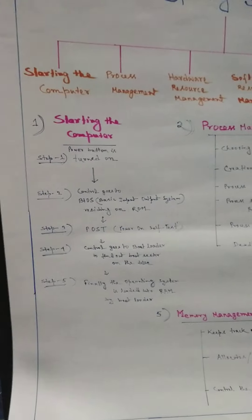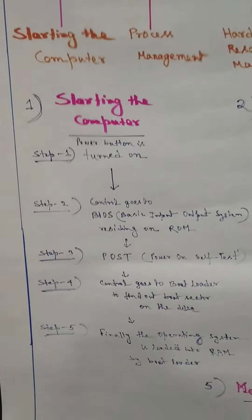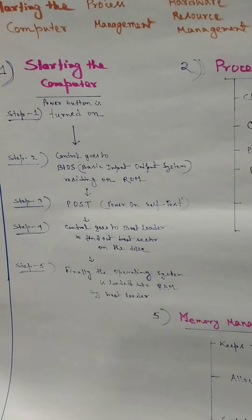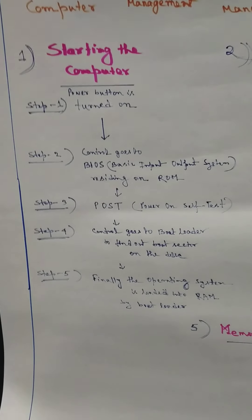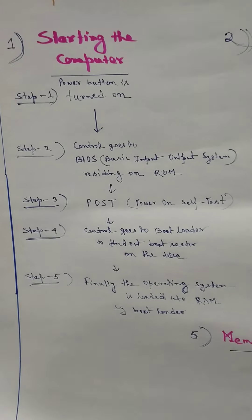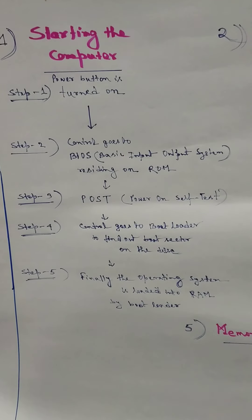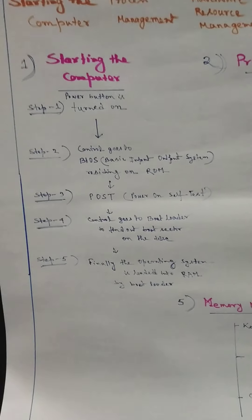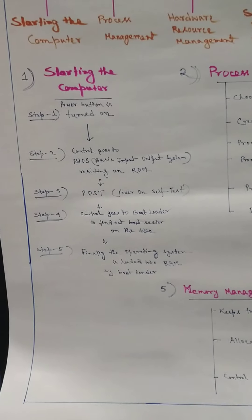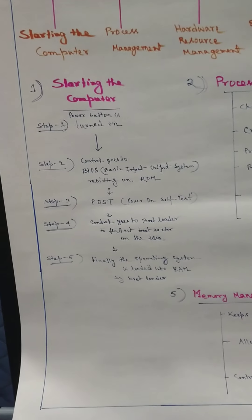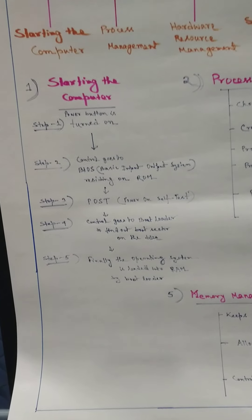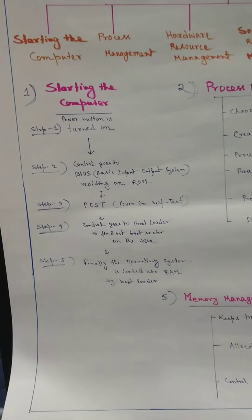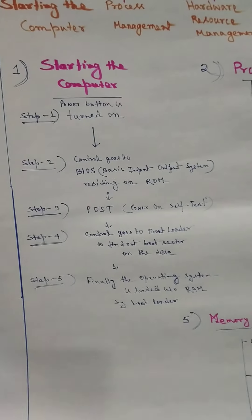So first you have to know how the operating system helps in starting up the computer. Step one: the power button is turned on. Then control goes to BIOS. The full form of BIOS is basic input output system, residing on ROM — that is read only memory. The content of ROM is permanent and does not go away when the power is turned off, and BIOS resides on ROM.